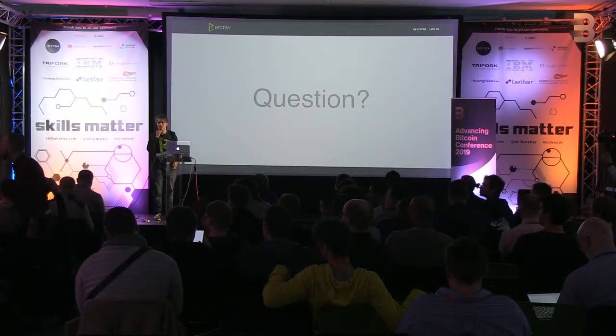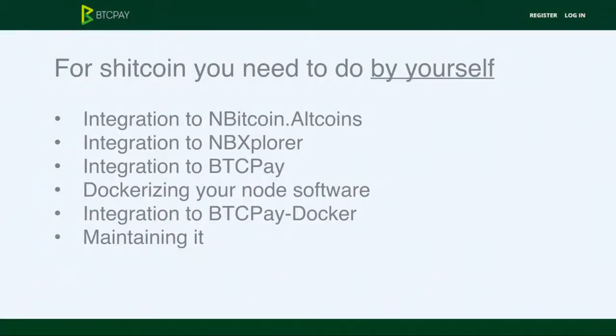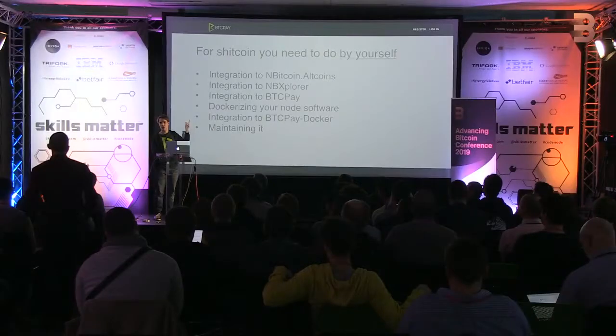If you want to do your altcoin, you need to integrate to all parts of the stack used in BTC Pay. The way nBitcoin works and the way it's architected, if you don't use altcoin, there is no code path that goes to anything supported by altcoins, so there's no risk. Even if I support altcoin, it doesn't mean I'm downloading the node of the altcoin if you don't use it. Let's go deeper.